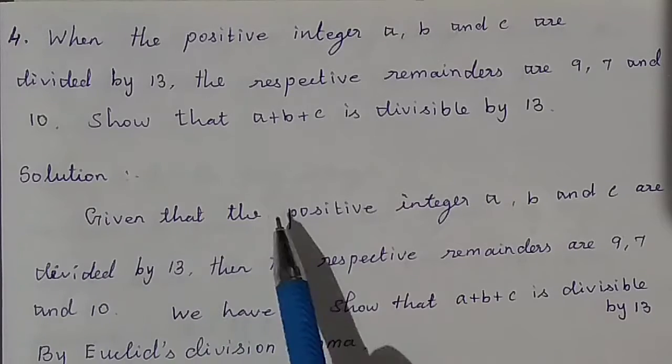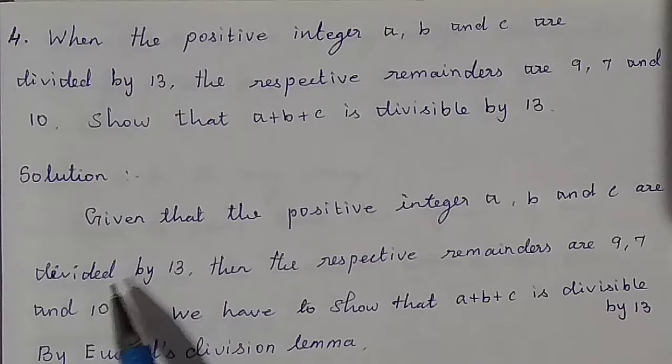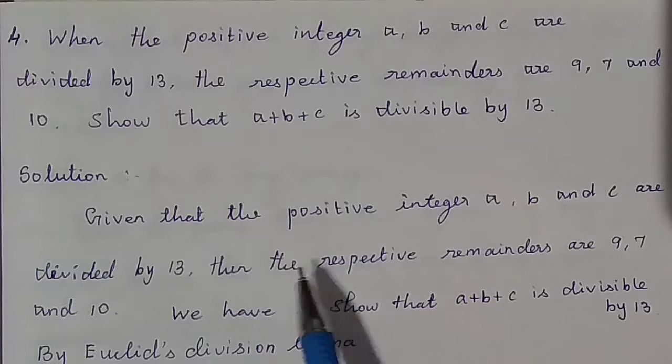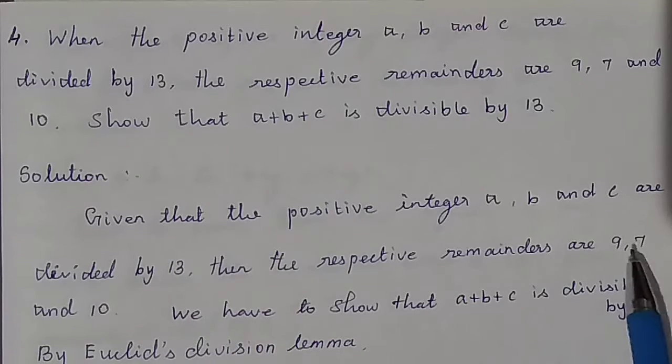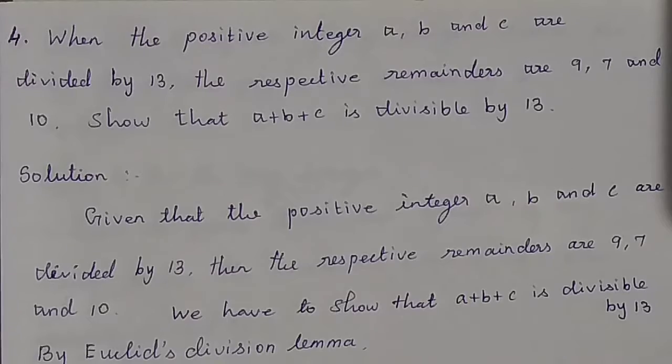Solution: Given that the positive integers a, b and c are divided by 13, the respective remainders are 9, 7 and 10. We have to show that a plus b plus c is divisible by 13.